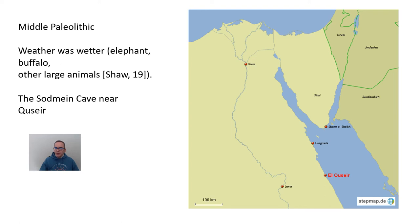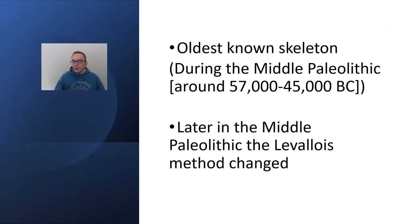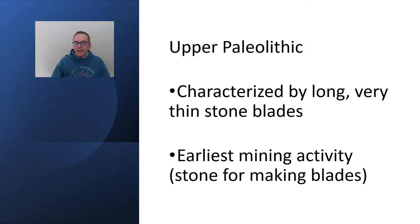During the Middle Paleolithic it was wetter, so you've got more elephants, buffalo, and other large animals. Shaw's textbook on ancient Egypt covers this on page 19, if you want the citation. We also have evidence for other animals at the Sodmein Cave. We also find the oldest known skeleton in Egypt — though these things change almost on a day-to-day basis — currently dated to around 5,700 to 4,500 BC. And then you do get the Levallois method changing, meaning they're starting to chip their hand axes in a different way.